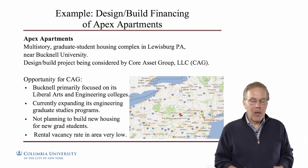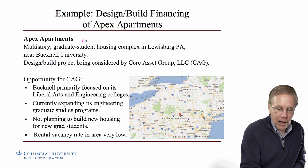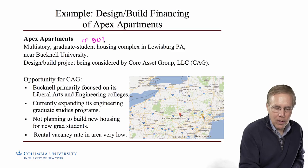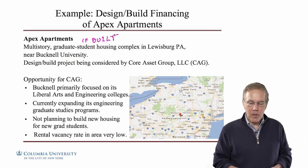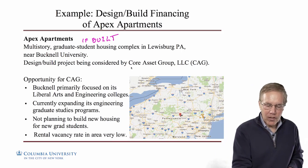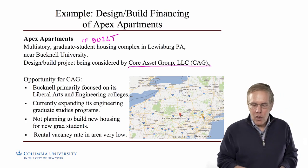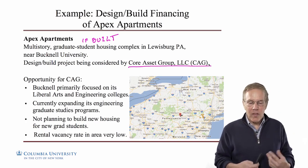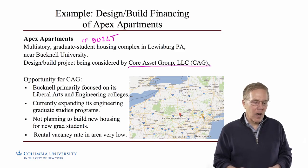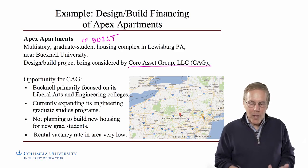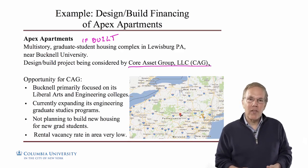So the Apex Apartments, if built, are going to be a multi-story graduate student housing complex in Lewisburg, Pennsylvania, near Bucknell University. This is a project under consideration by Core Asset Group, which does this type of off-site student housing for various colleges and universities along the East Coast. So what would the opportunity be here for Core Asset Group, or CAG?